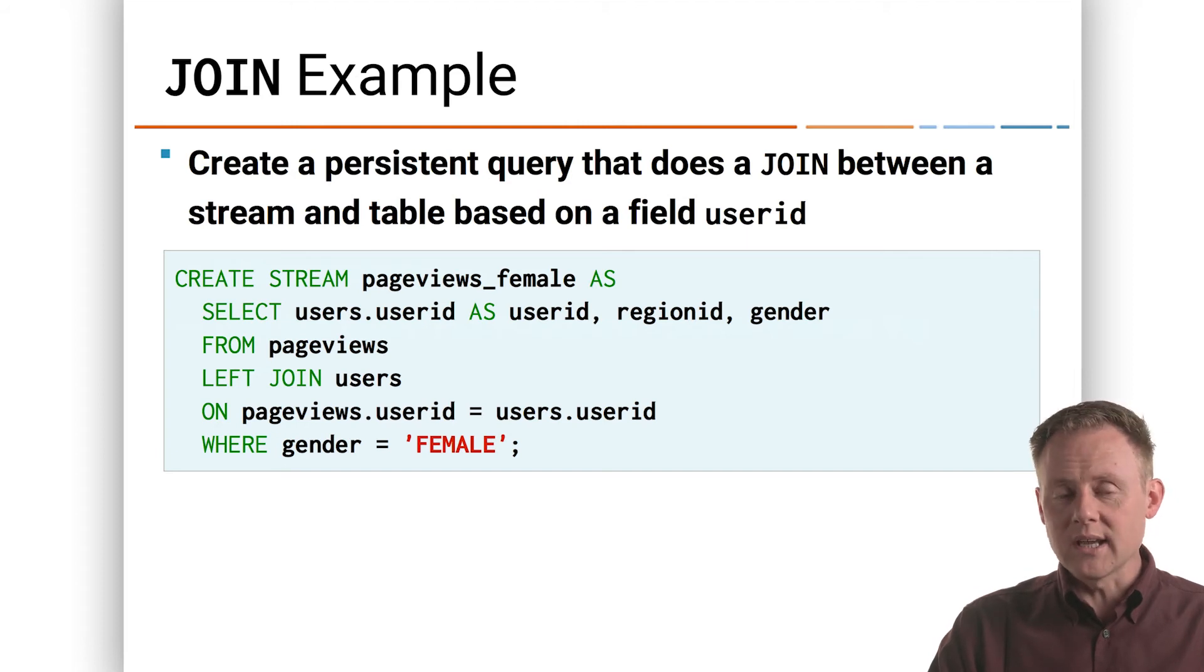Then region ID and gender from page views, which presumably is a stream, left join to users. And that makes a lot of sense. Users is very likely going to be a table. And left join makes sense because we still probably want the page views in the new stream, even unenriched, if that's the best we can do.